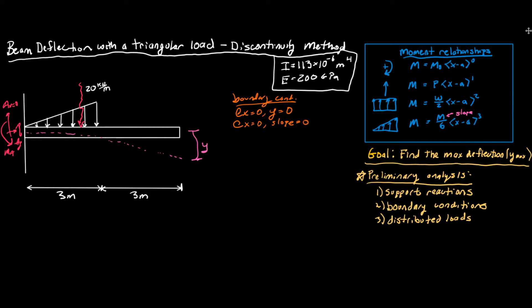If we do that, we know that this height here is 20 kilonewtons per meter and it's over three meters. So if we do one half base times height, that's going to be one half times 20 times three, which is 20 times 1.5. That's going to end up being a magnitude of 30 kilonewtons. So if we have 30 kilonewtons going down, that also means that Ay has to be 30 kilonewtons going up.